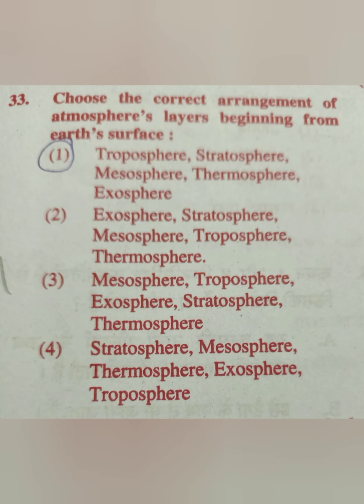Question 33: Choose the correct arrangement of atmosphere layers beginning from Earth's surface. I have already made a detailed video on this — if you haven't seen it, kindly watch it. Option number 1: Troposphere, Stratosphere, Mesosphere, Thermosphere and Exosphere. This is the correct answer — option number 1.